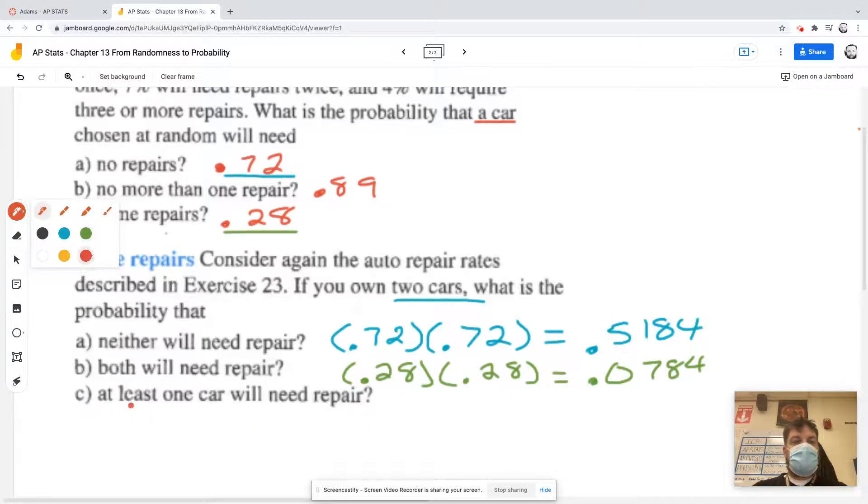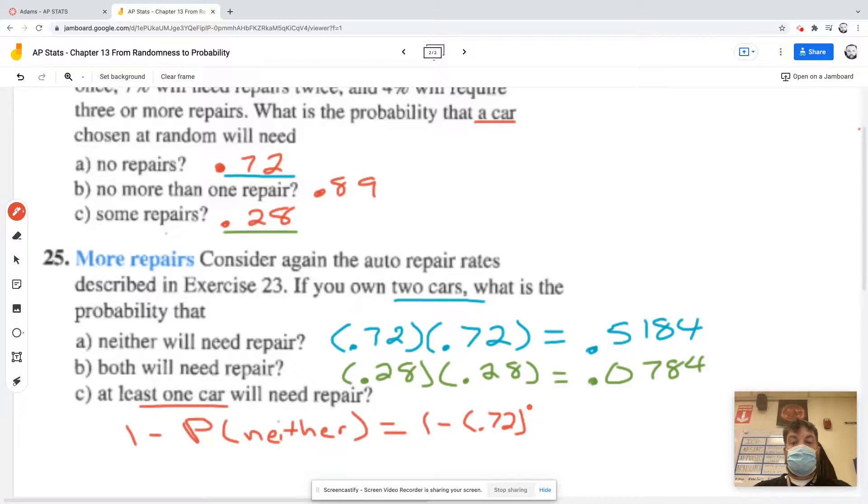And then lastly, at least one car will need to be repaired. So this is an interesting one. At least one car. Now we got to approach this slightly different. So I could have one repaired or both repaired. So what's the complement of that scenario? None of them. None of them will need to be repaired, right? So then I could say one minus neither or one minus 0.72 squared or one minus this 0.5184. And that gives me 0.4816.